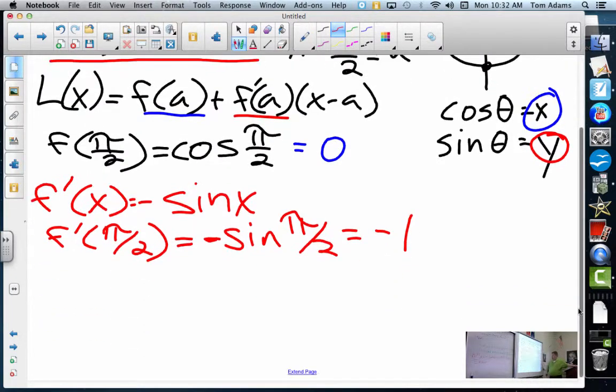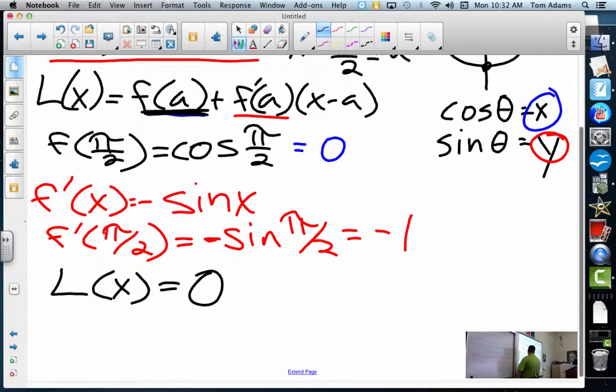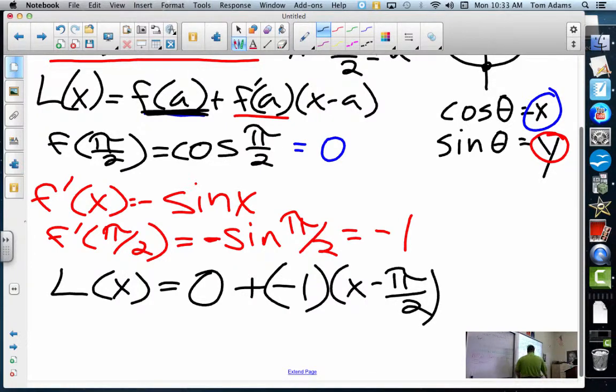So now if I want to write my linear equation, I would say that my linear approximation is equal to f(a) value, so it's 0, plus negative 1 times (x - π/2). And I wrote that down, sometimes if I explain it it's confusing, but do you guys see where I got everything? a is π/2, f(a) is 0, f'(a) is negative 1.